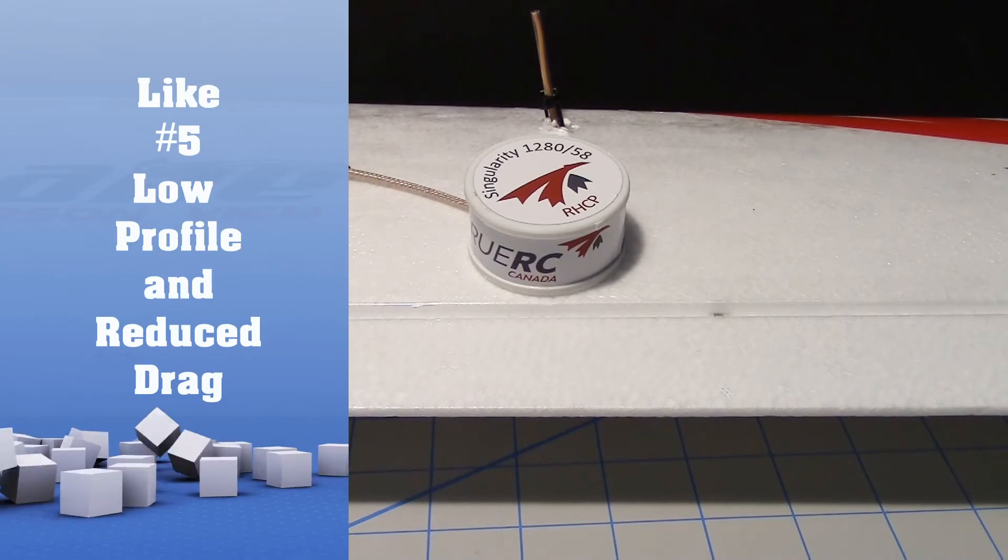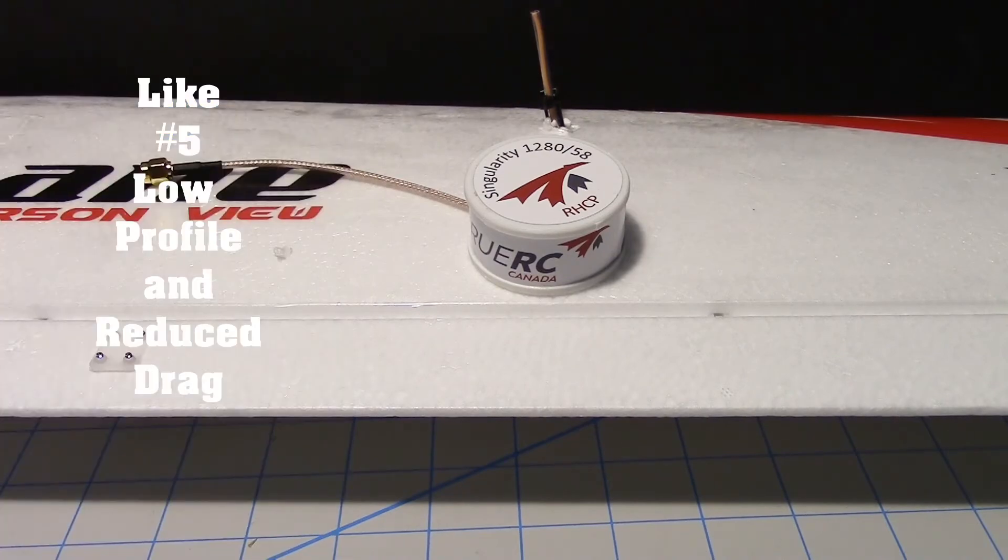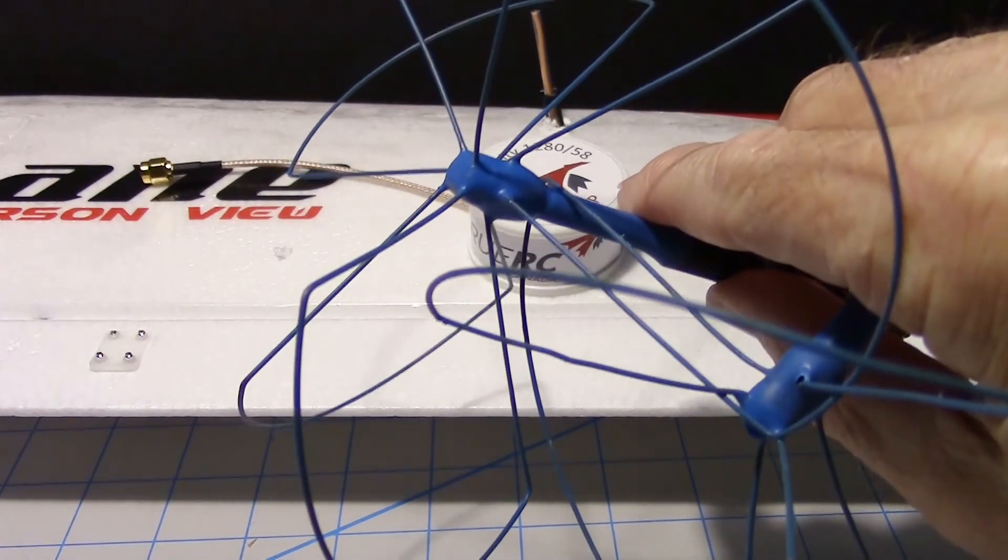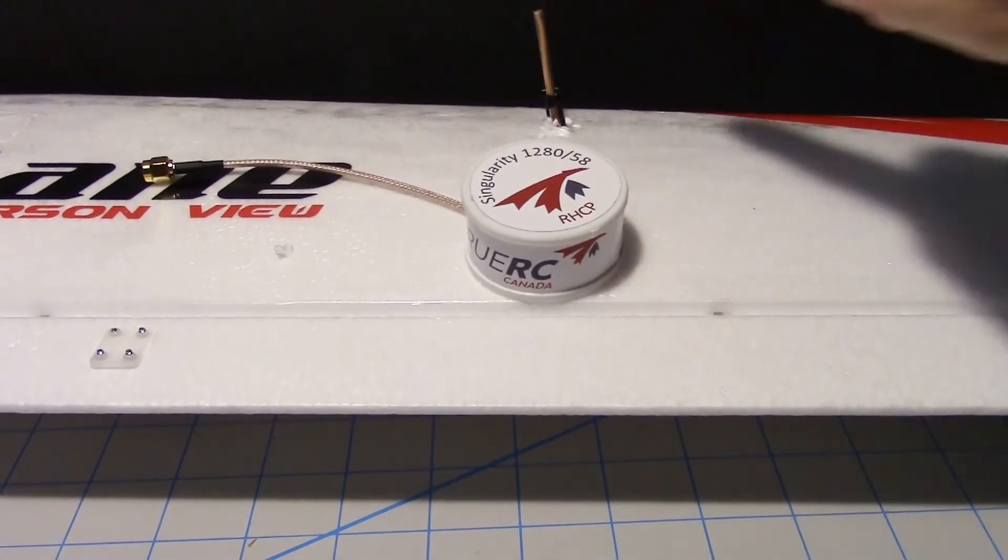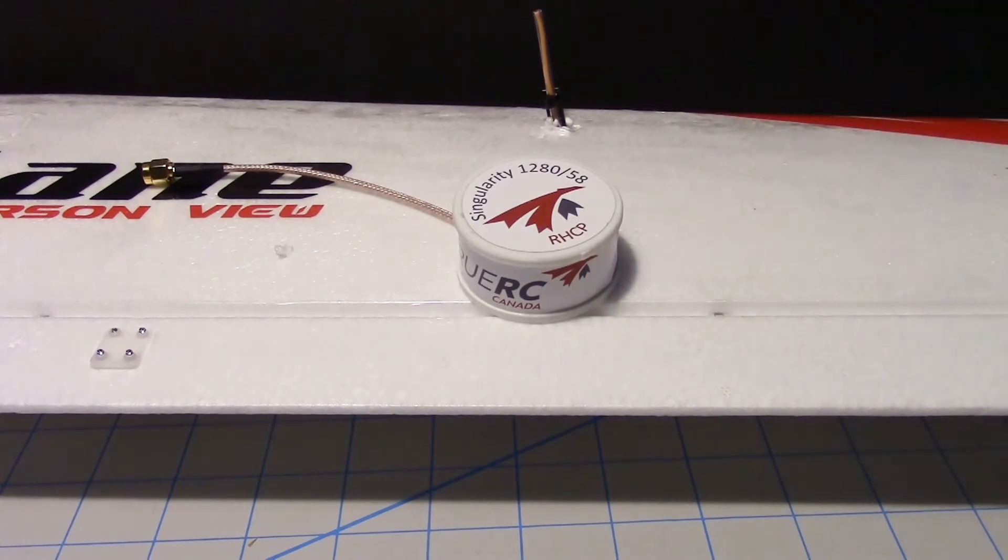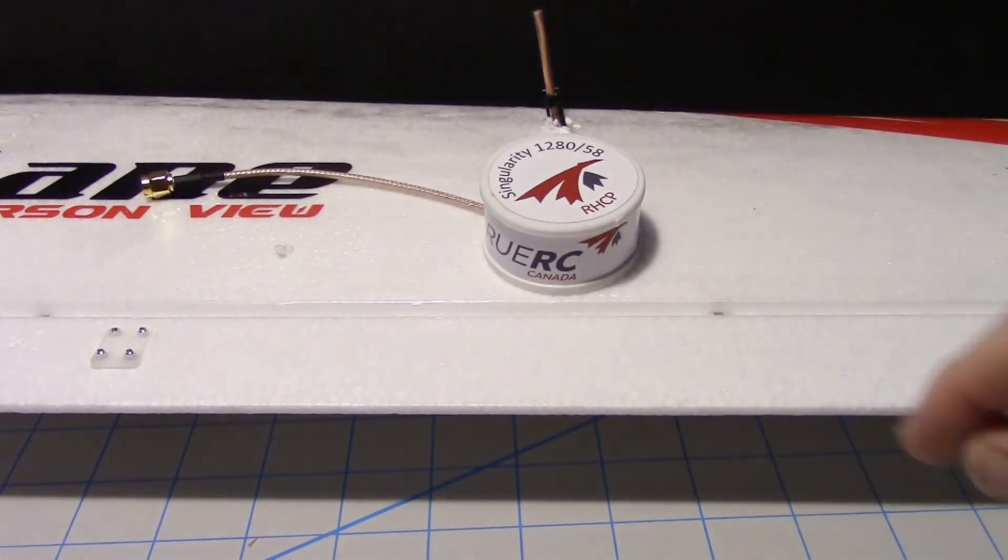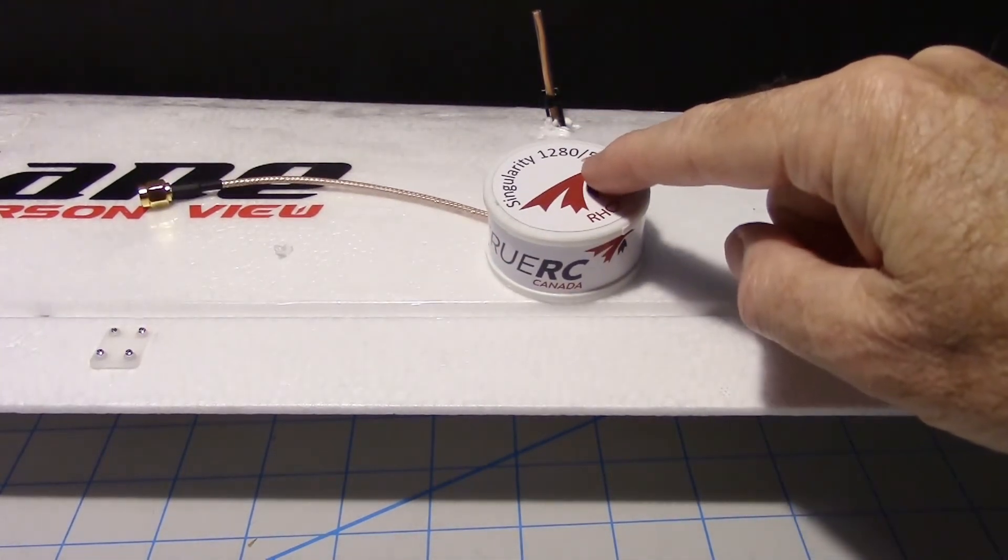And my fifth point is they can definitely have reduced drag as compared to something like this but maybe not as much as the dipole antenna like this. However if you don't like things sticking up out of your wing and you want circular polarized then this might be the solution.